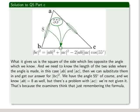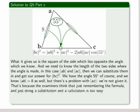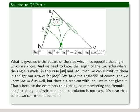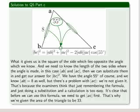That's because the examiners think that just remembering the formula and just doing a substitution and a calculation is too easy. It's clear that before we can use this formula, the cosine rule, we need to get AC first. That's why we're given the area of the triangle to be 33cm squared.